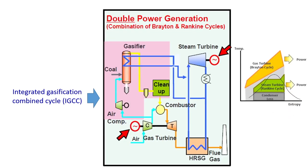We can also have an integrated gasification combined cycle (IGCC). We gasify biomass to produce producer gas, clean it, and introduce it into the combustor of a gas turbine to produce electricity. Again, we have a heat recovery steam generator to produce electricity from steam. That means we can couple two cycles: the gas turbine cycle, which is the Brayton cycle, and the steam turbine cycle, which is the Rankine cycle, producing two different power outputs.